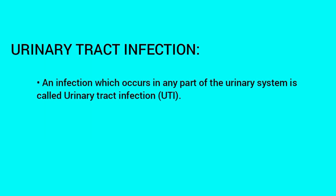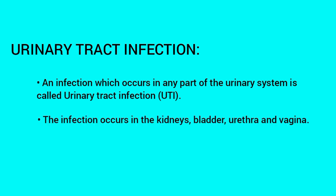UTI is an infection which occurs in any part of the urinary system, called urinary tract infection. The infection can occur in the kidneys, bladder, urethra, and vagina.